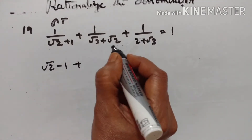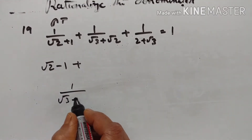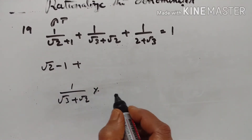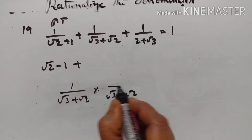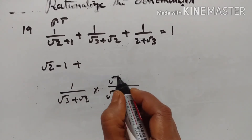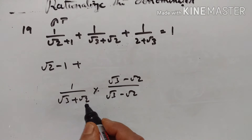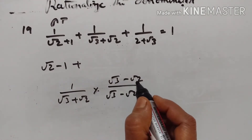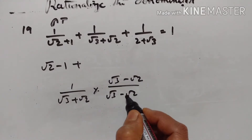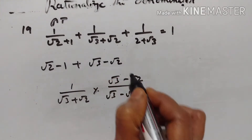Let us take the second term: 1 upon square root of 3 plus square root of 2, multiplied by square root of 3 minus square root of 2 over square root of 3 minus square root of 2. Using a squared minus b squared, the denominator becomes 3 minus 2 equals 1. So the value is equal to square root of 3 minus square root of 2.